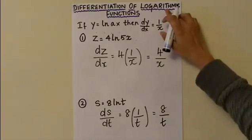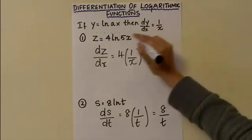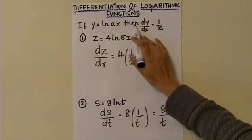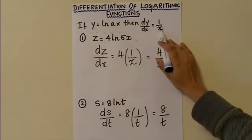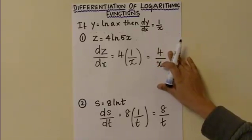This is the differentiation of logarithmic functions using the formula: if y equals ln ax, then dy over dx is equal to 1 over x.